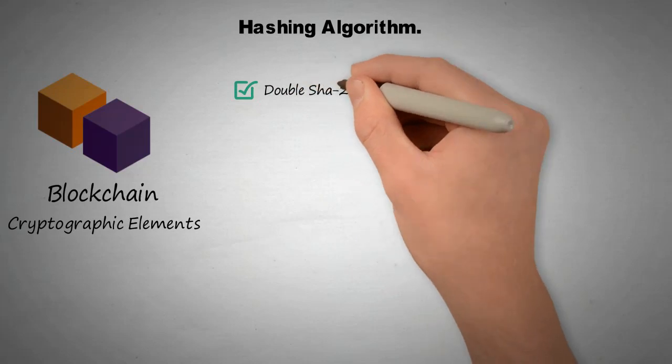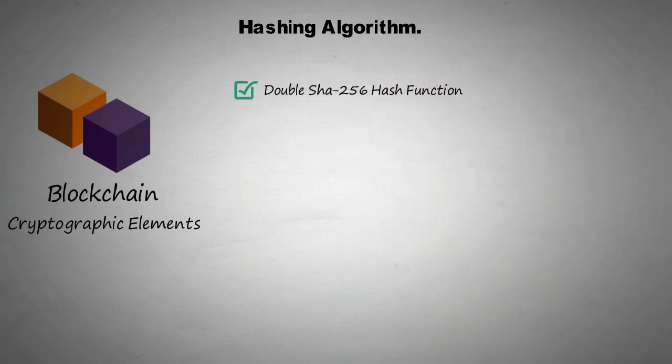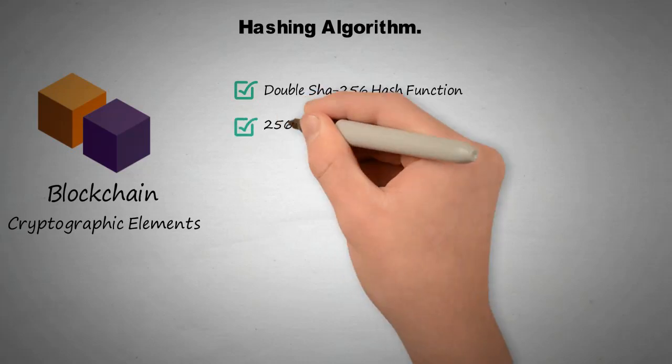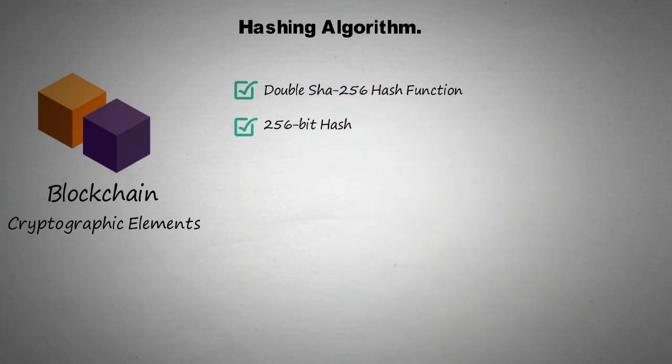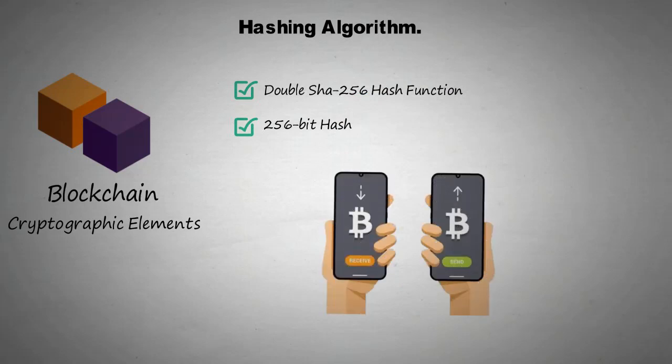For example, the Bitcoin blockchain uses the double SHA-256 hash function, which takes transaction data and hashes or compresses it into a 256-bit hash. By making it hard to reverse the hash value, a transaction becomes inflexible.